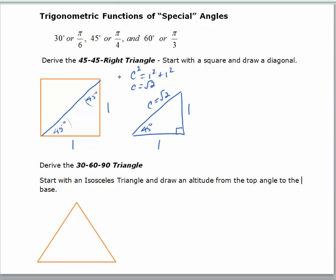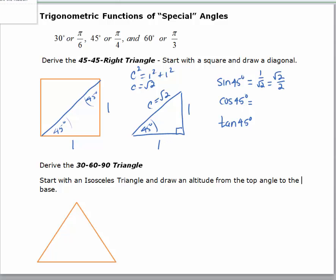We can use this triangle to find the six trigonometric functions for 45 degrees. Remember, since sine is a function, the sine of 45 degrees is the same value regardless of how big the triangle is. The sine of 45 degrees is opposite over hypotenuse: 1 over the square root of 2, which rationalizes to the square root of 2 over 2. The cosine of 45 is adjacent over hypotenuse: also 1 over the square root of 2, or the square root of 2 over 2. The tangent is opposite over adjacent, so the tangent of 45 degrees is just 1.